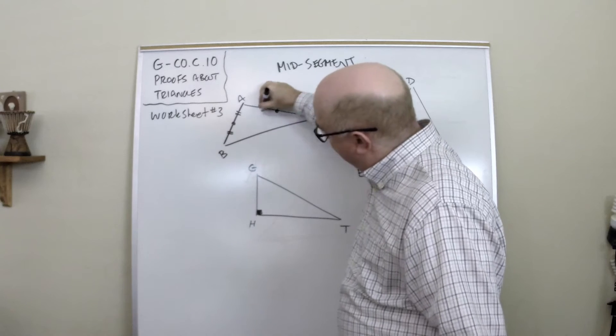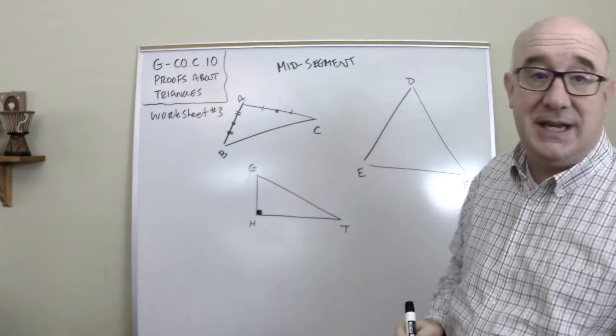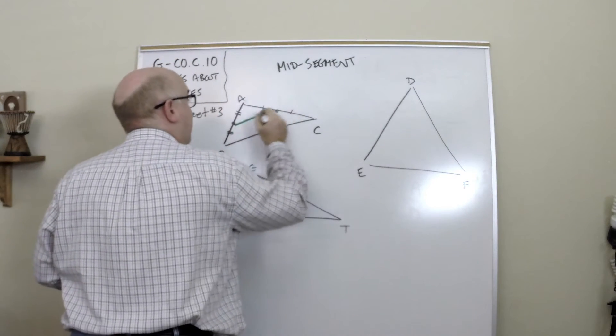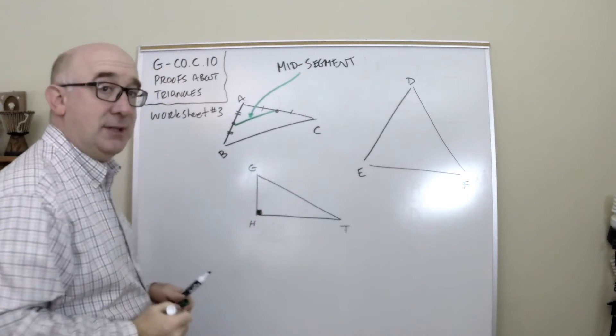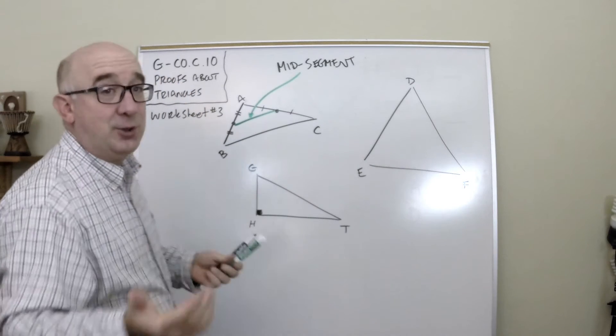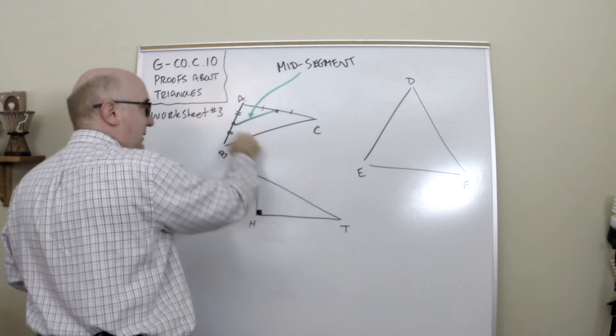If I was to find the midpoint of AB here, and the midpoint of AC, and if I was to connect them with a segment, this is known as the mid-segment. There are three potential mid-segments, by the way. If I found this one, I could connect it, and so on.